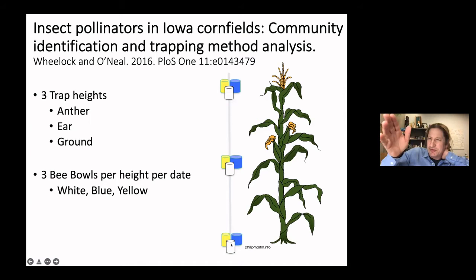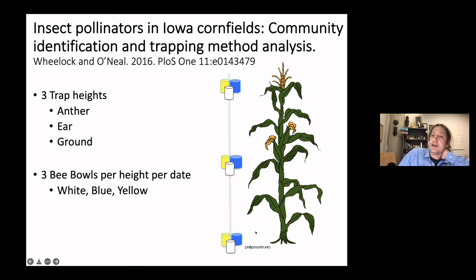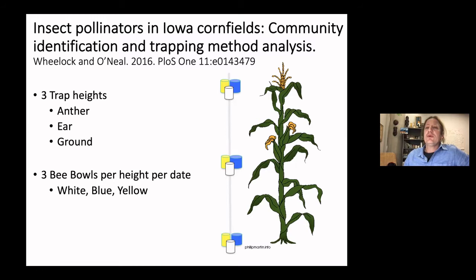Someone mentioned that ground-nesting bees might be captured at the lower height as they visit their nests — that's true. But if we're trying to come up with protocols to determine how many bees and what diversity of bees are in these fields, and if we're going to test hypotheses about whether it's the pesticide use or the land use around the fields, these are methodological questions we have to work out.